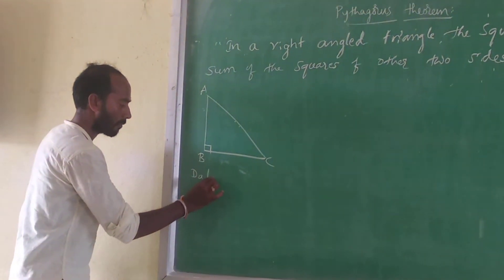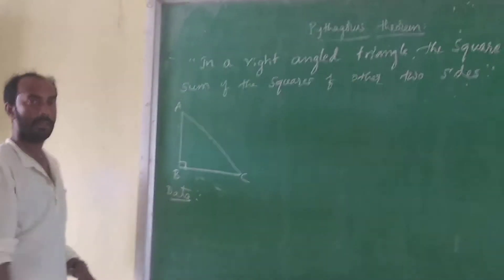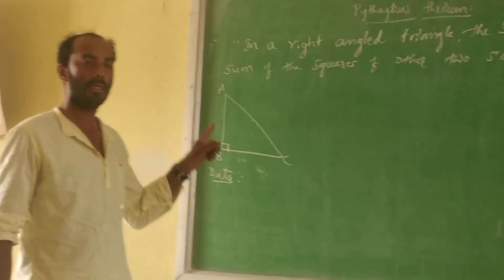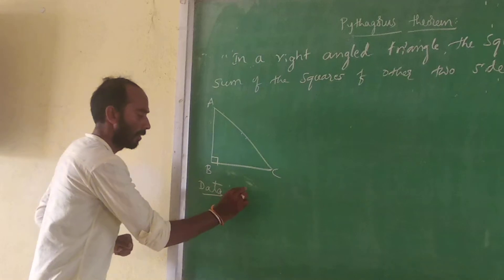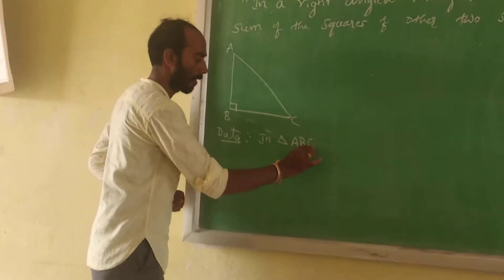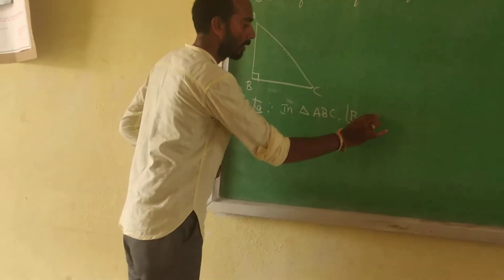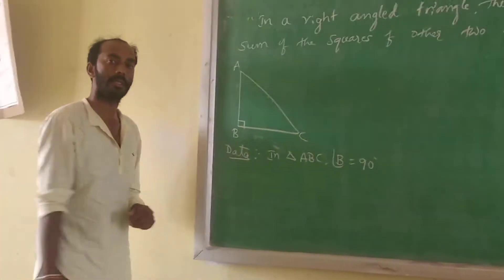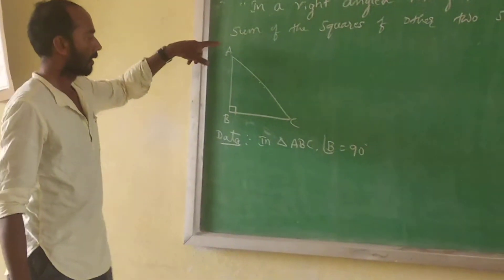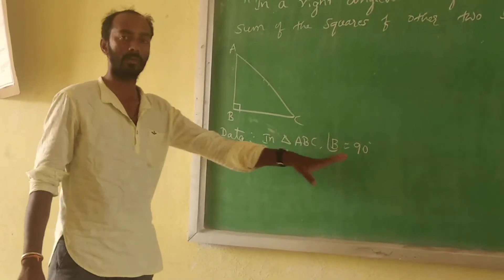Data. Steps are coming out of the steps. In triangle ABC, angle B is equal to 90°. This is the data.